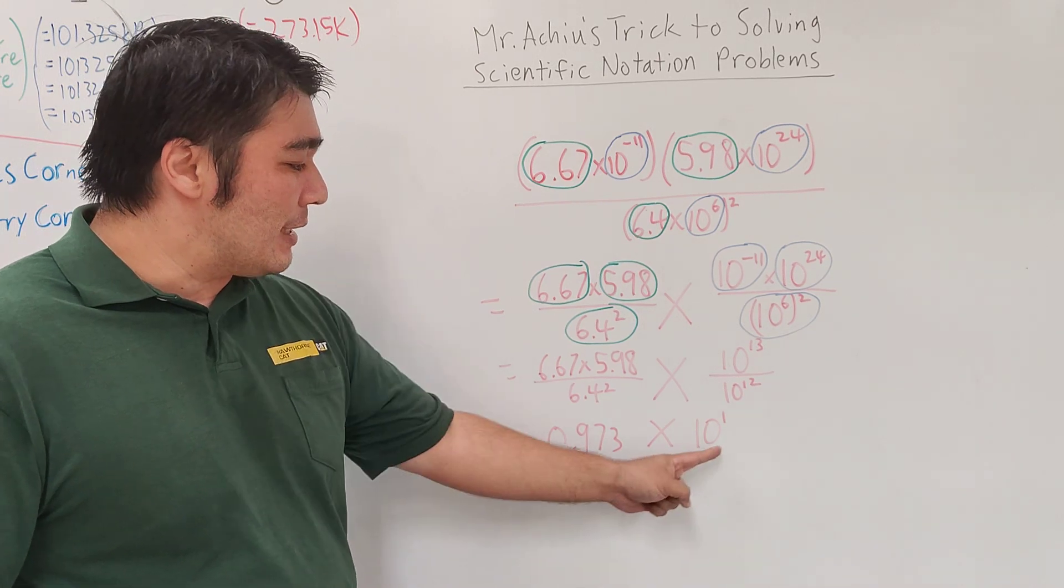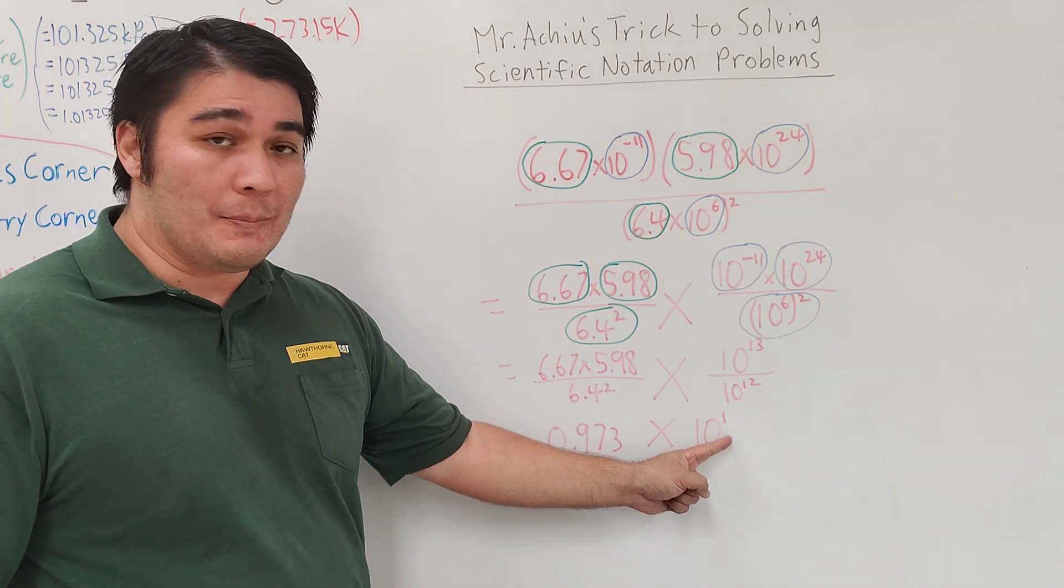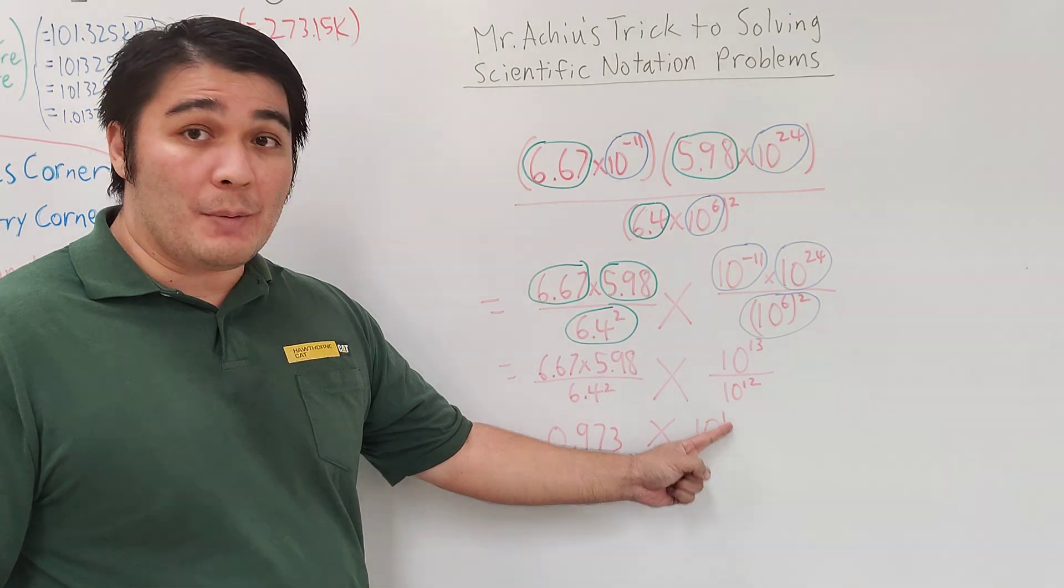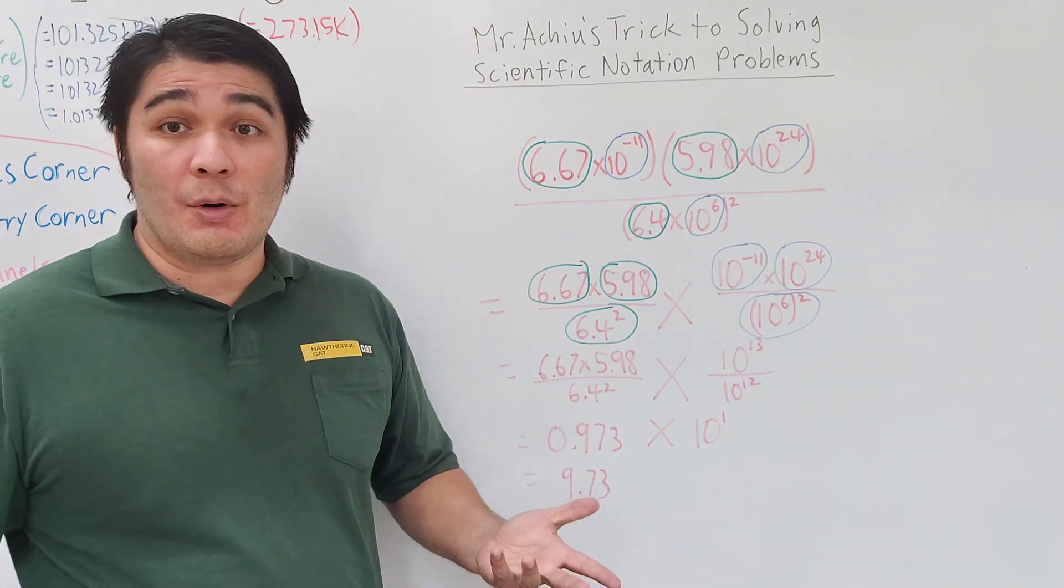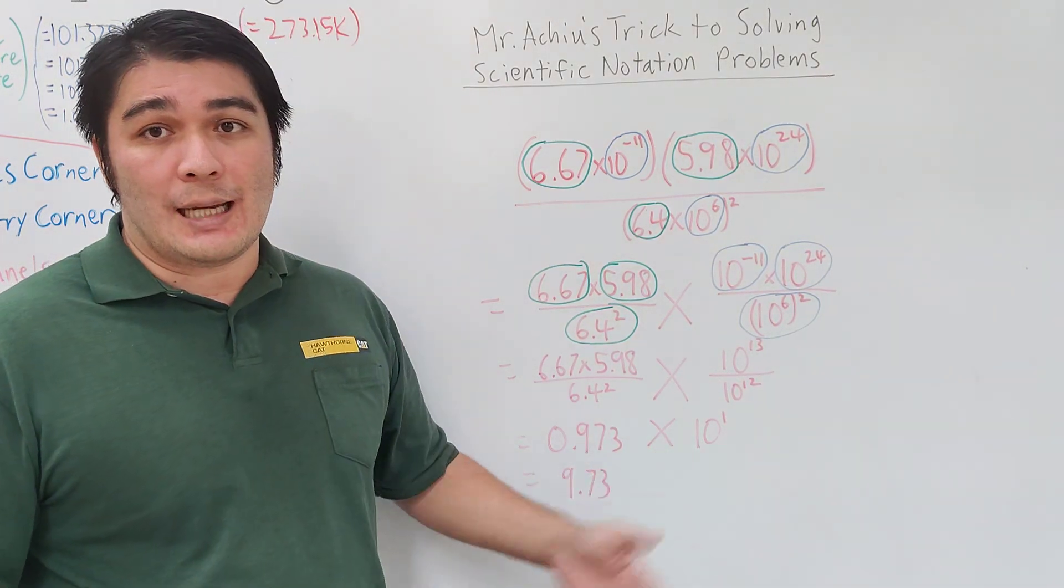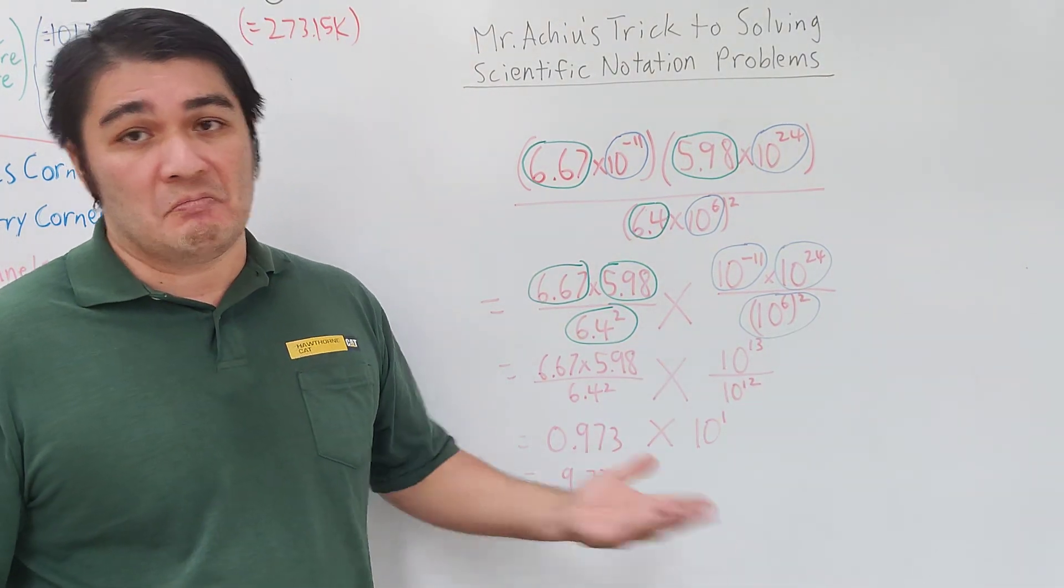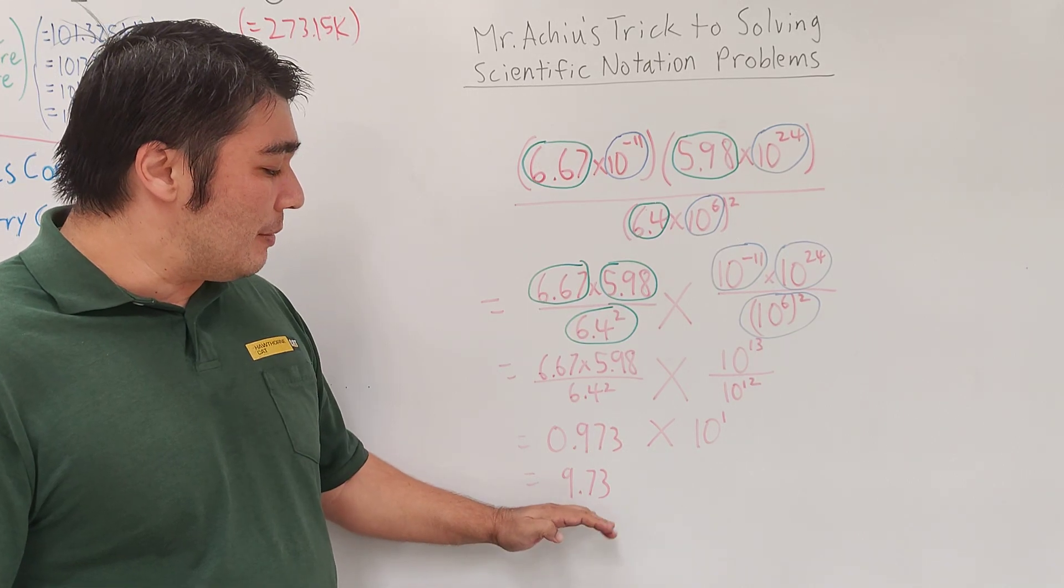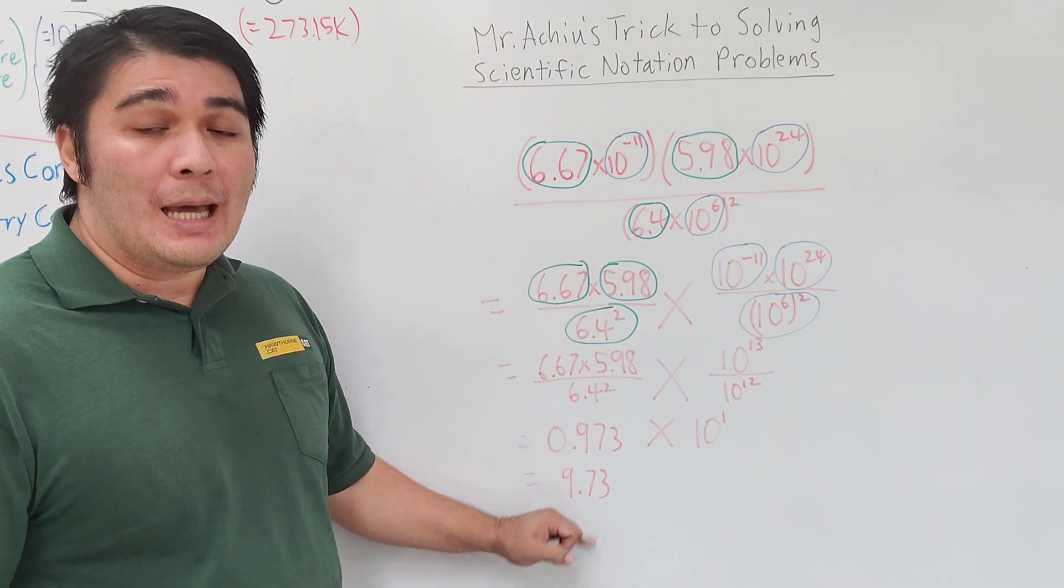So I now have 10 to the 0th power, which is 1. I don't need to write times 1 anymore, so I'll leave it as is. Therefore, my answer is about 9.73. If you're thinking this number might look familiar - these numbers do look familiar -